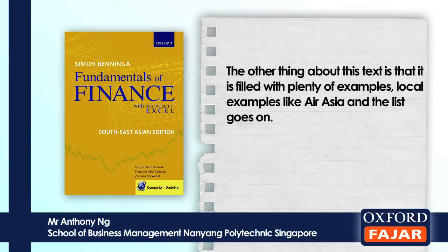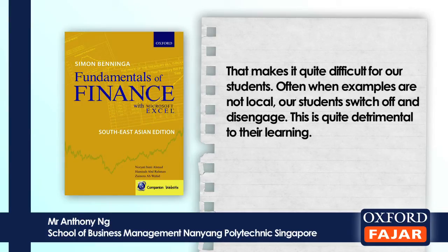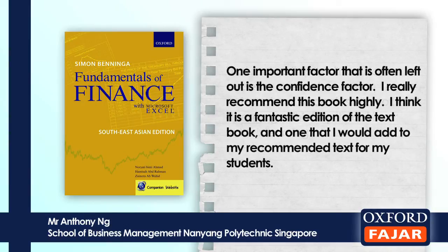The text is filled with plenty of local examples like Asia. For the longest time, a lot of texts are coming out of the U.S., and even though there are adaptive international versions, a lot of it still doesn't apply to the Southeast Asian context, which makes it quite difficult for students. When examples are not local in nature, students switch off and disengage from learning, which is detrimental. One important factor that's often left out is the confidence factor. I highly recommend this book — it's a fantastic addition and one I will add to my recommended texts for my students.